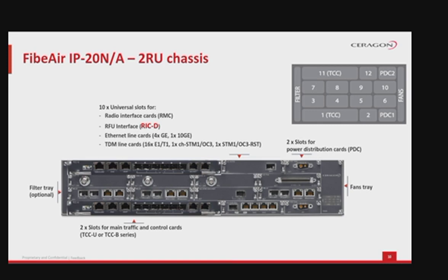Each TCC contains at least two 1 GbE Ethernet combo interfaces, either electrical or optical, and with the TCCU, six interfaces are available with 1 GbE or 10 GbE capacity. There are ten universal slots that may include various cards based on the functionality, configuration, and setup of the system, which will be reviewed in the following slides.